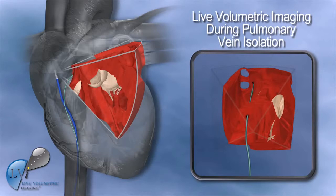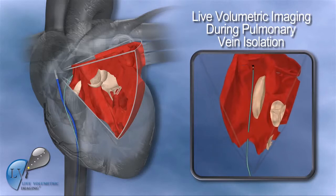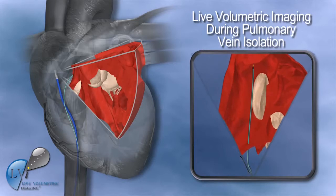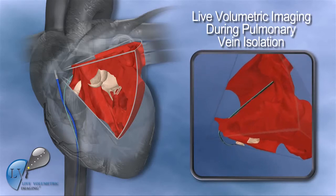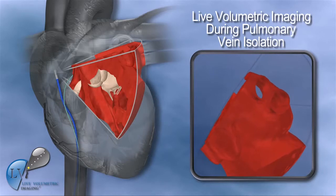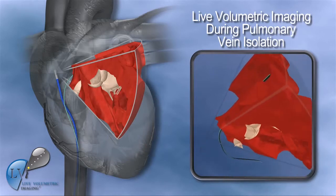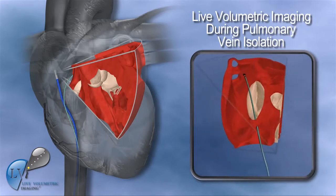Radiofrequency energy is applied to electrically isolate the veins from the wall, allowing a return to normal heart rhythm. Better visualization of the soft tissue provided by the real-time 3D ultrasound view from the LVI catheter can help improve accuracy of treatment and minimize unintended injury.